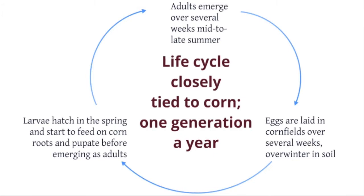Adults of these beetles will emerge over an extended period of time from mid to late summer. This can take several weeks, and adults mate and lay eggs during that time. The eggs are laid in corn fields and overwinter in the soil, and we know that winter temperatures and snowfall affect their survival. Winter temperatures affect the percent of eggs hatching in the spring, and historically extreme winters greatly reduced western corn rootworm populations in Minnesota and South Dakota.